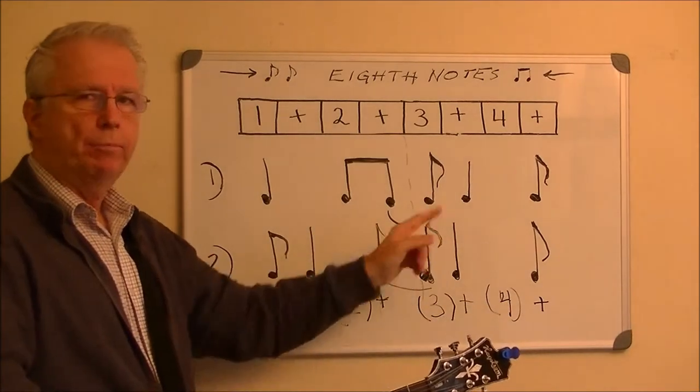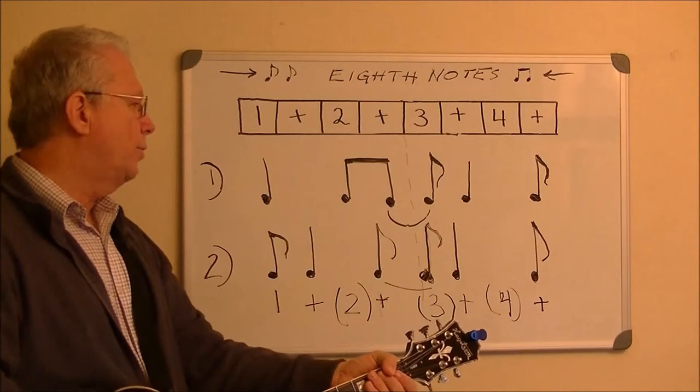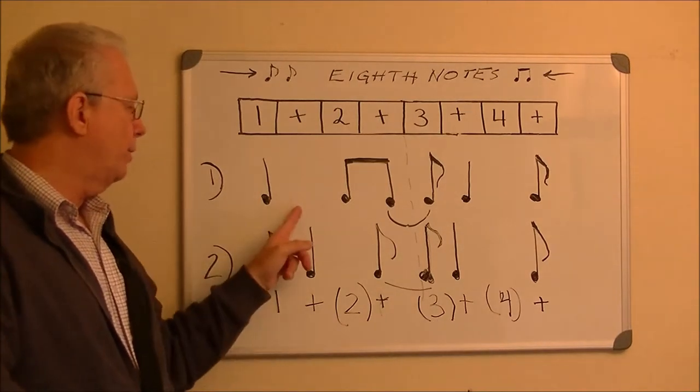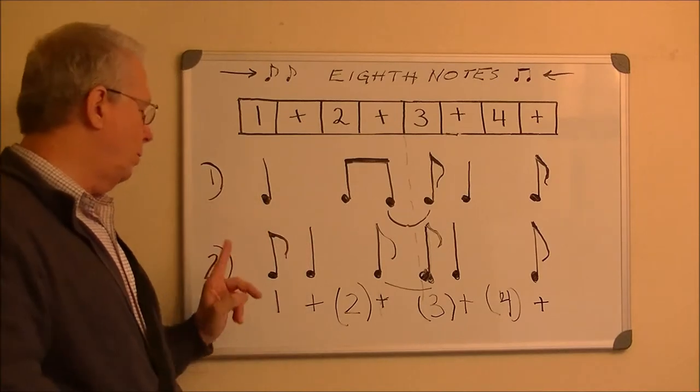The tie is going to wipe out beat number three, one, two, and, three, and, four, and, one. Okay, we're done with rhythm one. Let's go to rhythm two.